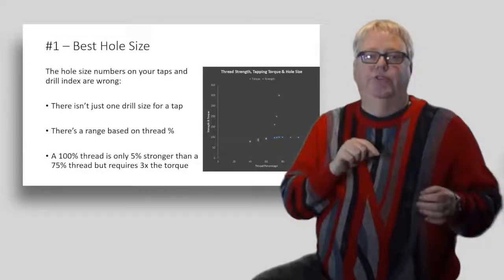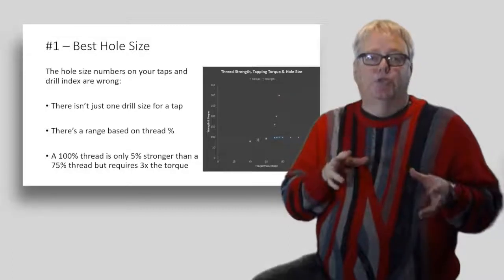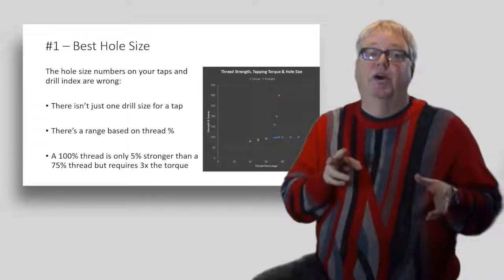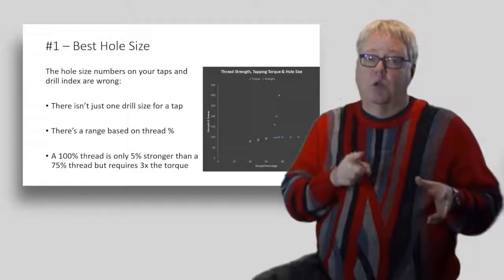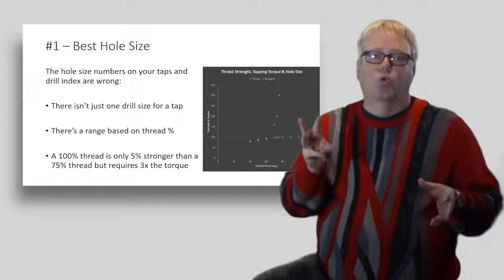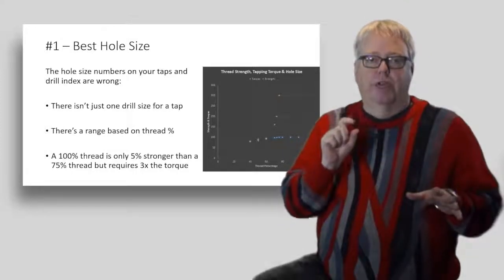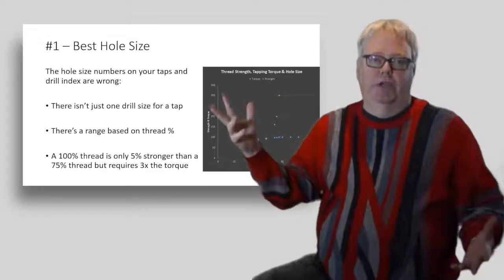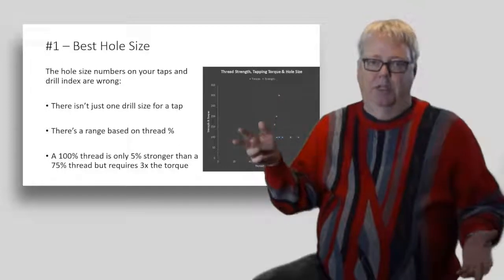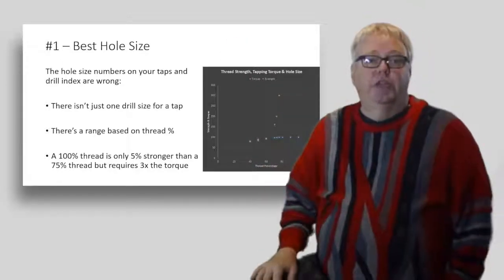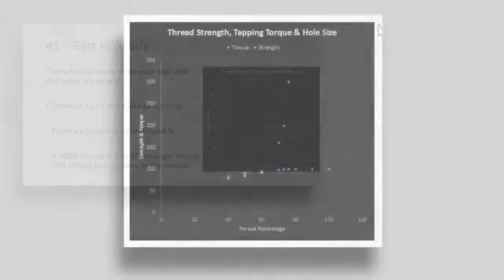This is what's key: a 100 percent thread is only 5 percent stronger than a 75 percent thread, but it requires three times the torque to tap it. So for just a little bit stronger thread, you wind up with a much greater chance of breaking your tap.